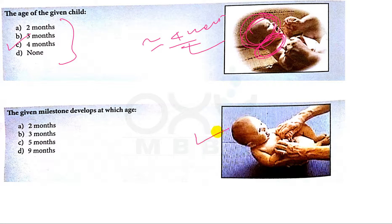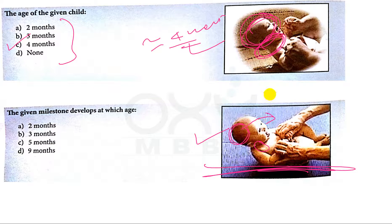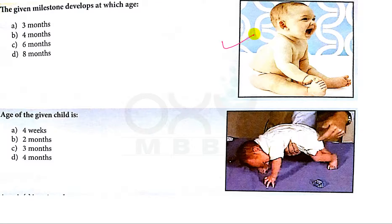Now in this picture, the baby has neck holding capacity, head control capacity, and now in the supine position, the head is lifting up. That is why it is more than four months, so C is the correct answer. Now in this picture, you can see the baby is sitting without any support, which is achieved at around eight months of age. So D is the correct answer.